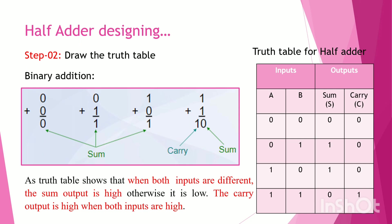We perform binary addition. The truth table shows combinations: 0+0=0, 0+1=1, 1+0=1, and 1+1 gives sum 0 carry 1. When both inputs are different, the sum is high.